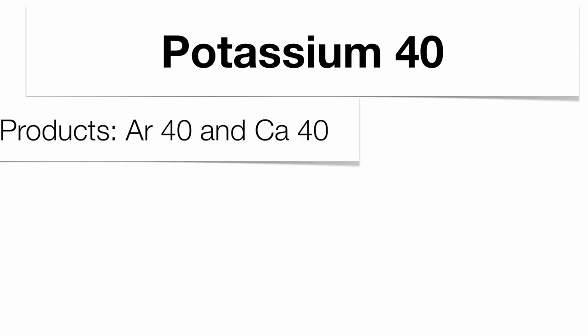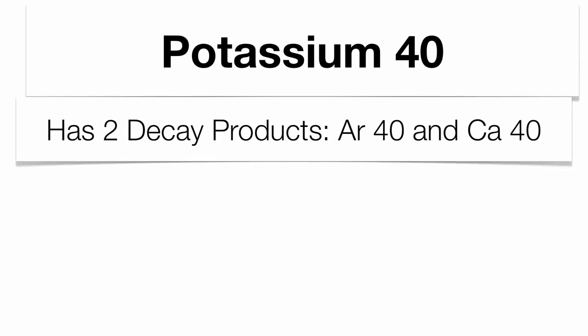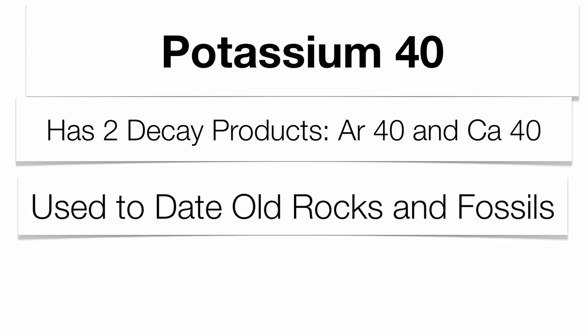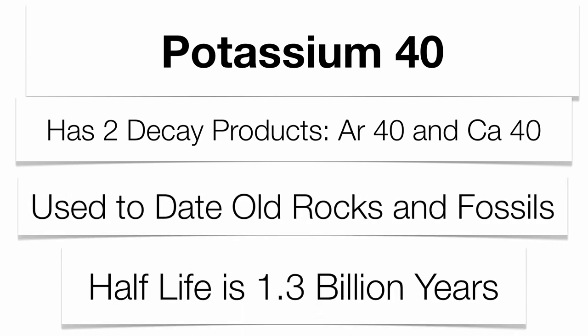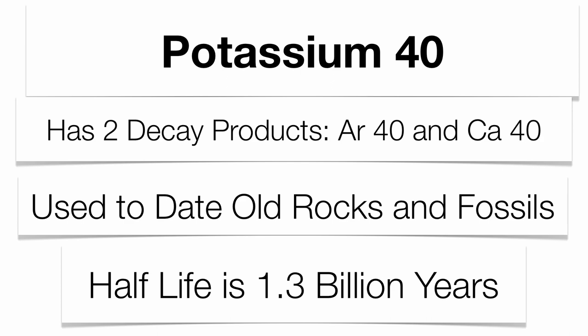Potassium-40 actually has two daughter products. It has argon-40 and calcium-40. This is going to be used to date very old rocks and fossils because it has a half-life of about 1.3 billion years.